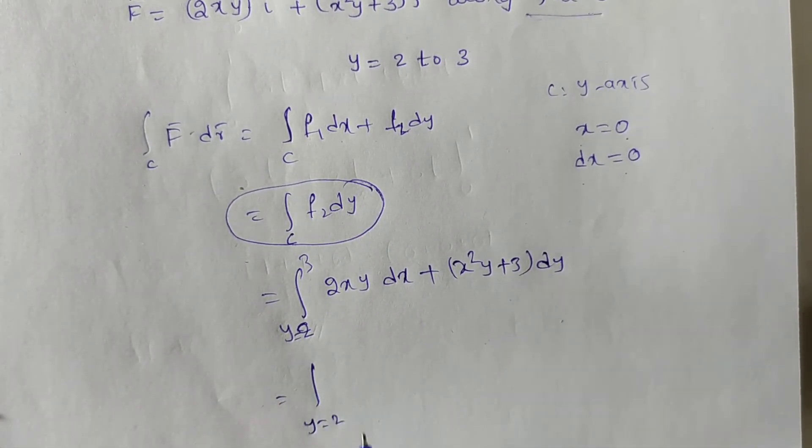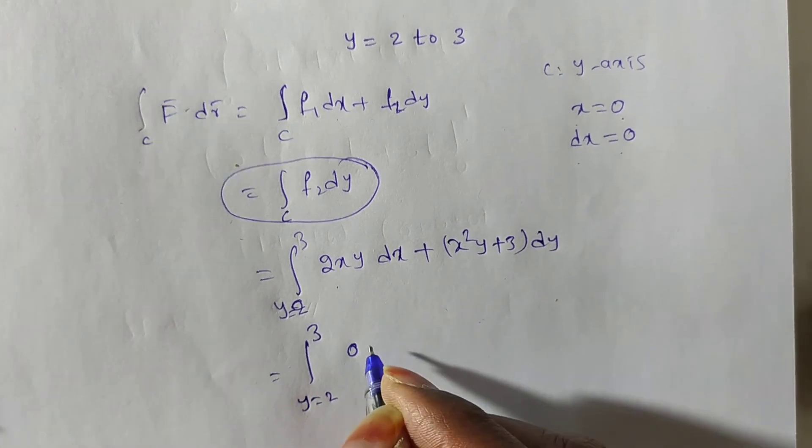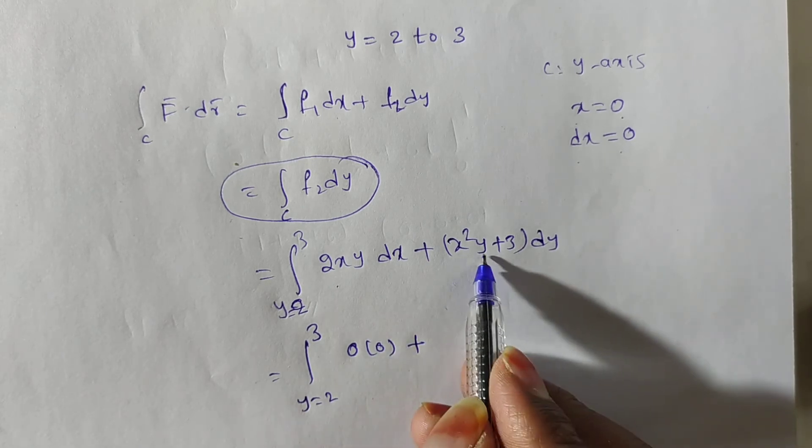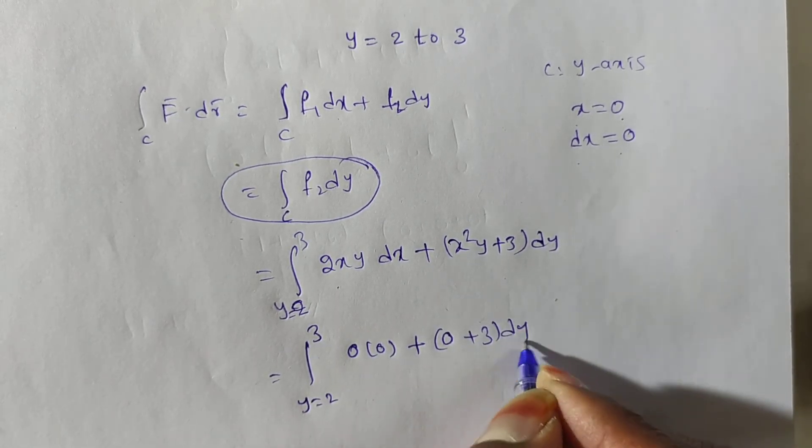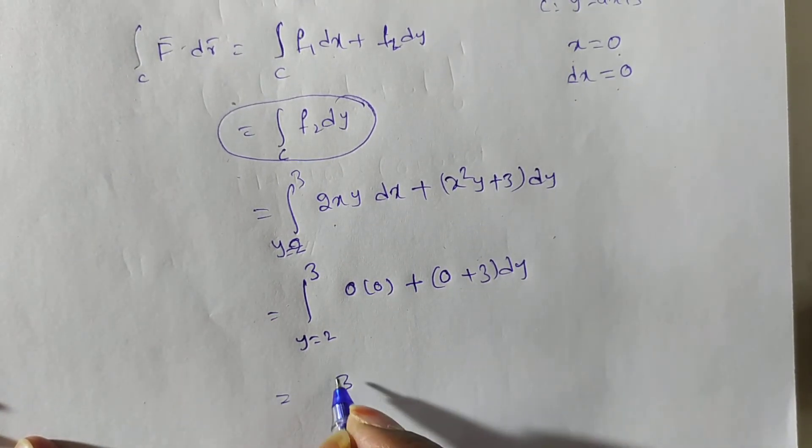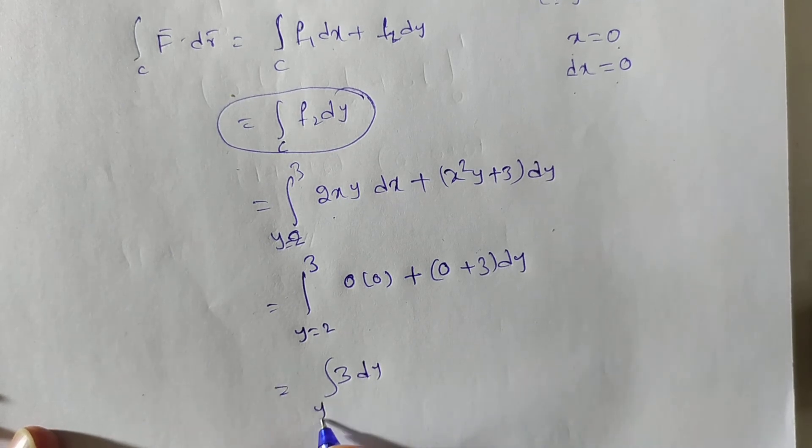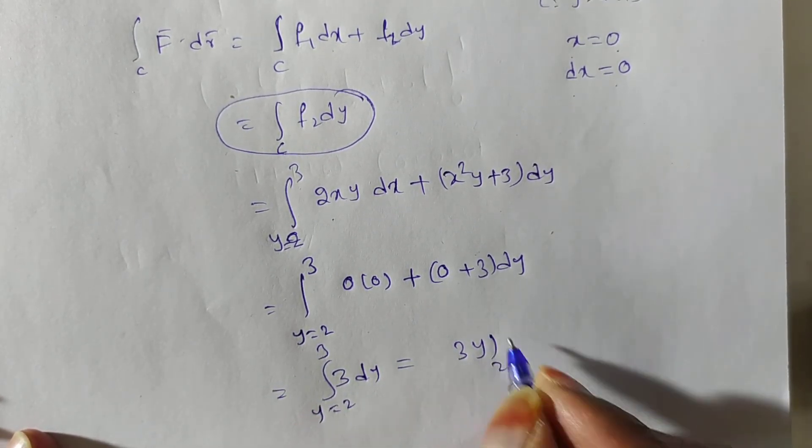Now, y=2 to 3. x equals 0. So 0 into dx is also 0. Plus x²y, so 0 times y is 0. Plus 3 into dy is dy. So 0 plus 3 means 3 integral 3dy, y=2 to 3. This is 3y, limits from 2 to 3.